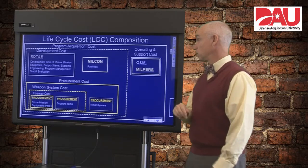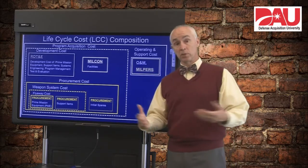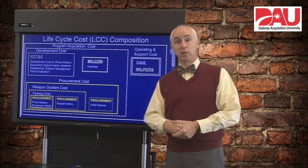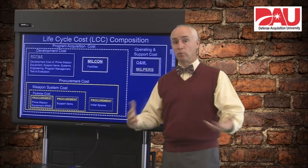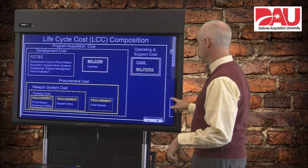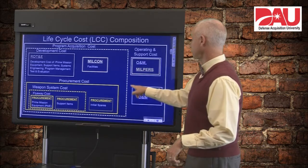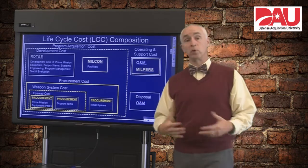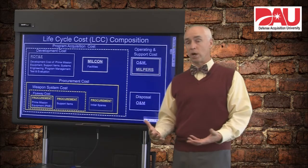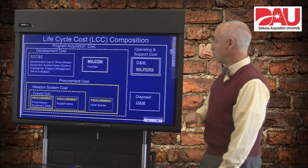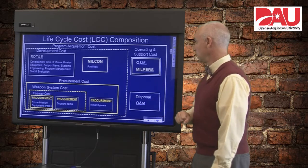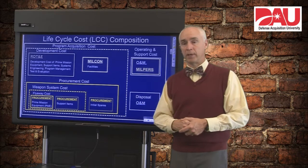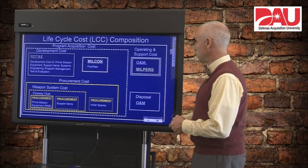And then there's also the very expensive MILPERS, which is basically all the costs of salaries of your DOD personnel — uniformed or not — that work on the system. And then lastly, we're going to have to pay to dispose of the system as well. Disposal costs are usually out of the O&M appropriation, so normally that's what we're going to have to pay out of to do our disposal.